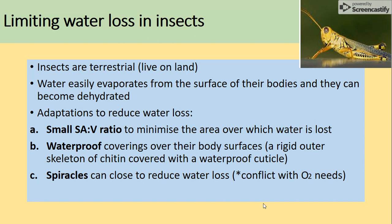They have a small surface area to volume ratio, so that will minimize water loss. They've got waterproof coverings on the body surface - that's another adaptation. And they've got spiracles. Spiracles can close to prevent water loss, but that will conflict with the uptake of oxygen that they need for respiration.